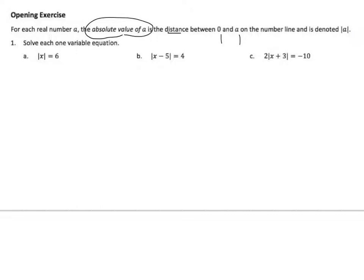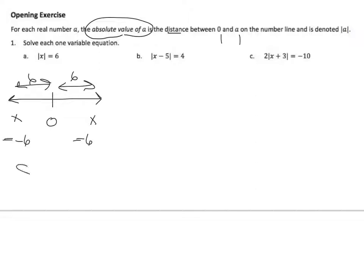Starting with the first example: solve each one-variable equation. If I look at absolute value of x equals 6, the distance between 0 and x on the number line is 6. So my distance is 6. That means x can be equal to negative 6 or 6. I would write that in set notation: negative 6 and 6.